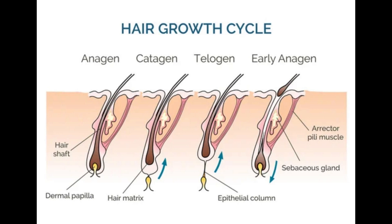Whether hair is straight or curly depends on the cross-sectional shape of the hair. Round hair grows straight out of the skin; the more oval-shaped the cross section is, the curlier the hair will be. The color of the hair is determined by the amount of melanin in the hardened cells, which can vary a lot from person to person and changes over a lifetime. The amount of melanin typically decreases as people get older, and more air gets trapped inside the hair — it then loses its color and turns white.